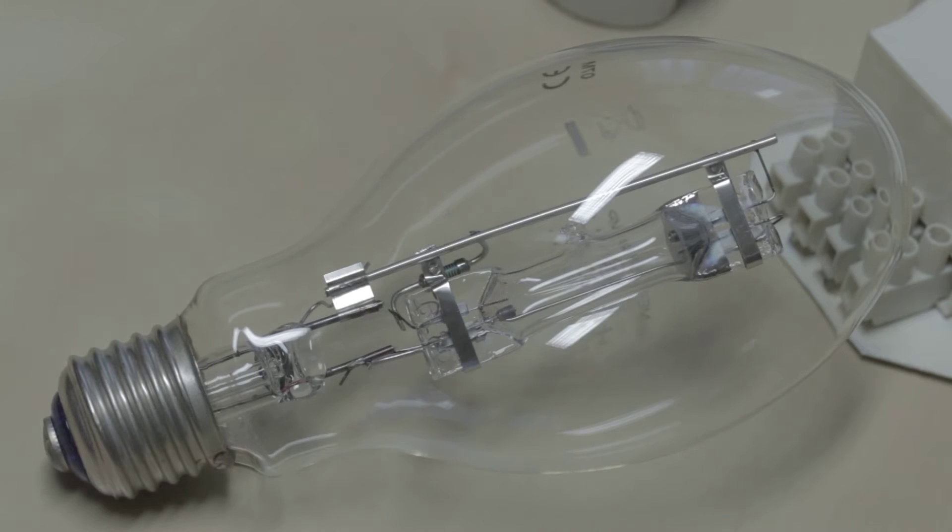Basically how these work, we send an electric current through a gas which is ionized and produces light. In this case, it's mercury vapor.